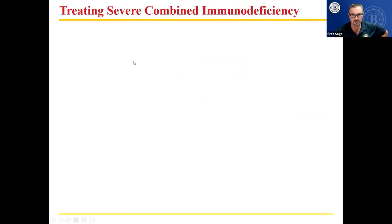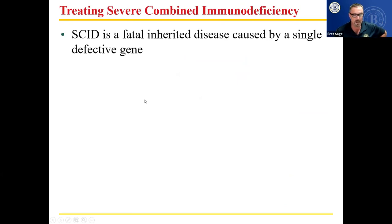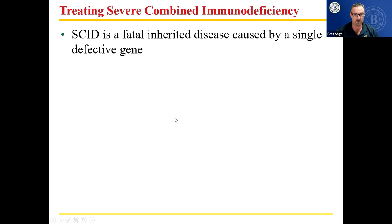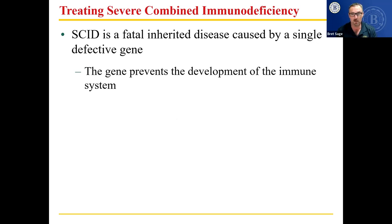Severe combined immunodeficiency, sometimes called SCID, is a fatal inherited condition caused by a defective gene that prevents development of the immune system. You have to have an immune system to survive. People who don't have it are often isolated from all kinds of potential pathogens. There was a movie made decades ago called Boy in the Bubble — John Travolta played the boy in the bubble.